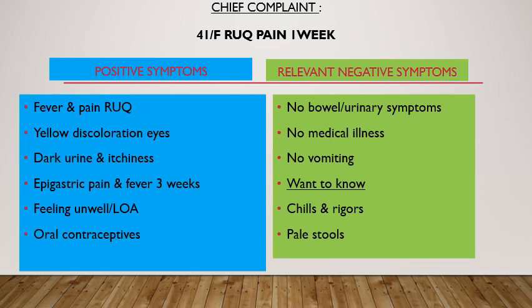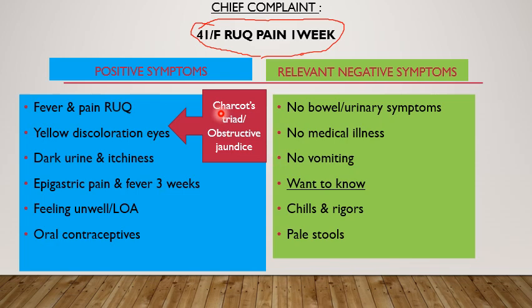Now let's analyze the symptoms. She is a 41-year-old female with right upper quadrant pain for one week, fever, and yellow discoloration of the eyes, dark urine, and itchiness — all signs and features of obstructive jaundice and Charcot's triad. She has been feeling unwell for the last three weeks with loss of appetite and epigastric pain, and has been on oral contraceptives. Relevant negative symptoms include no bowel or urinary symptoms, no medical illness, and no vomiting. We also want to know whether the fever is associated with chills or rigors.